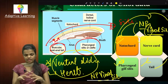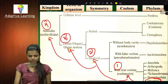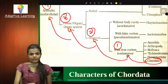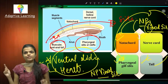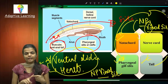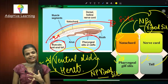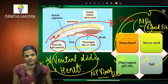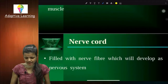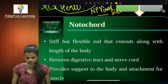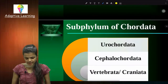So if you need to define chordates in an exam, write: notochord, nerve cord, pharyngeal gill slits, post-anal tail, and the heart which is present at the ventral side. I have already covered notochord, nerve cord, pharyngeal gill slits, and post-anal tail. Now Phylum Chordata is again classified into subphylums.